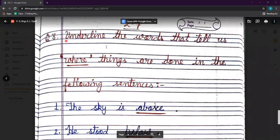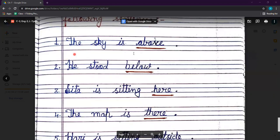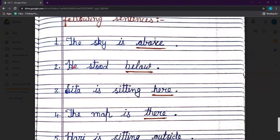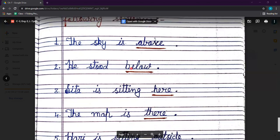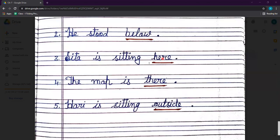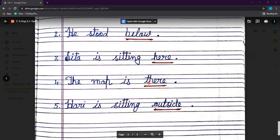No. 3, underline the words that tell us where things are done in the following sentences. No. 1, sky is above. He stood below. Sita is sitting here. The map is there. Hari is sitting outside.